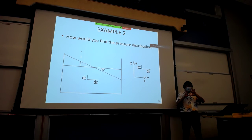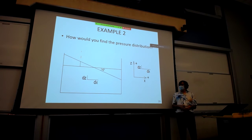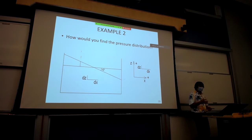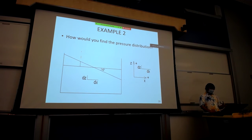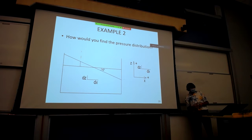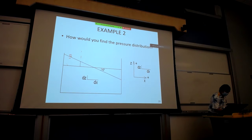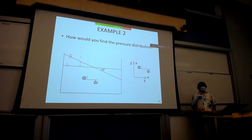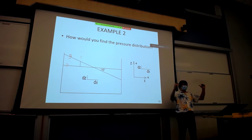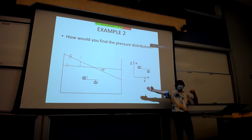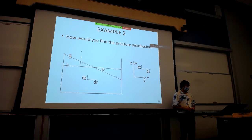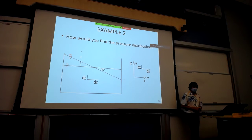How would you find the pressure distribution? This was our system: the initial state with a horizontal surface at rest. Accelerate to the right at 1.73 m/s², and you get a fluid surface of ten degrees off the horizontal as the final state.